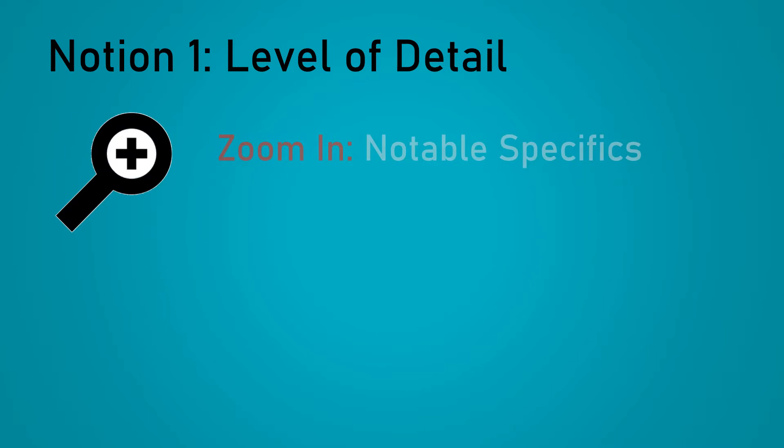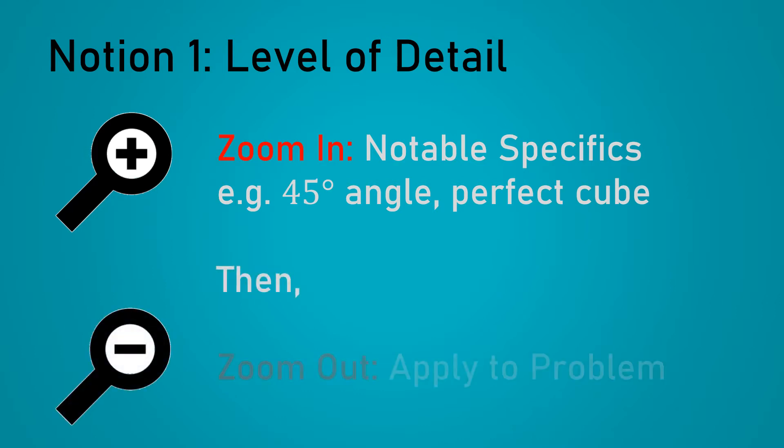The first notion of zooming in refers to the level of detail. We can zoom in to various specifics of the question. For instance, why are they telling me that the angle is 45 degrees? Or, hey, I recognize that 1331 is just 11 cubed. Once we recognize this, we can zoom out. We apply these observations to the problem as a whole.